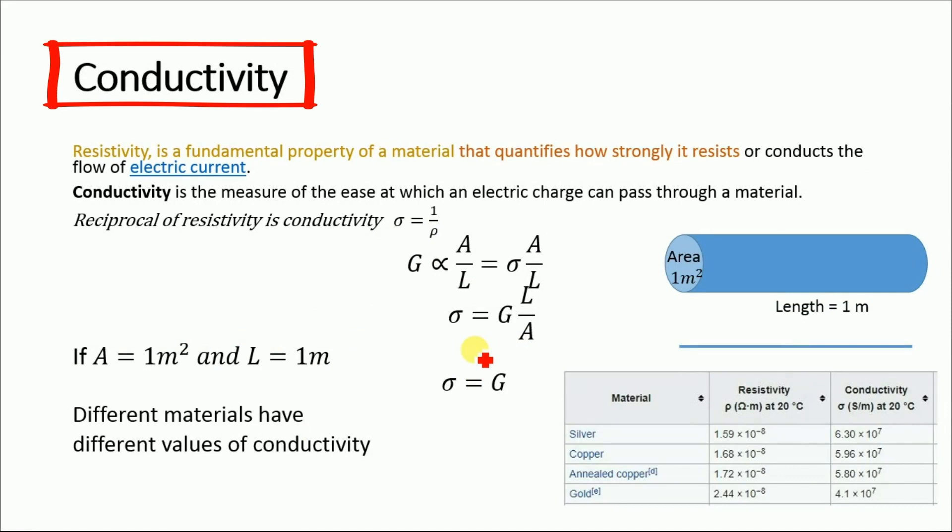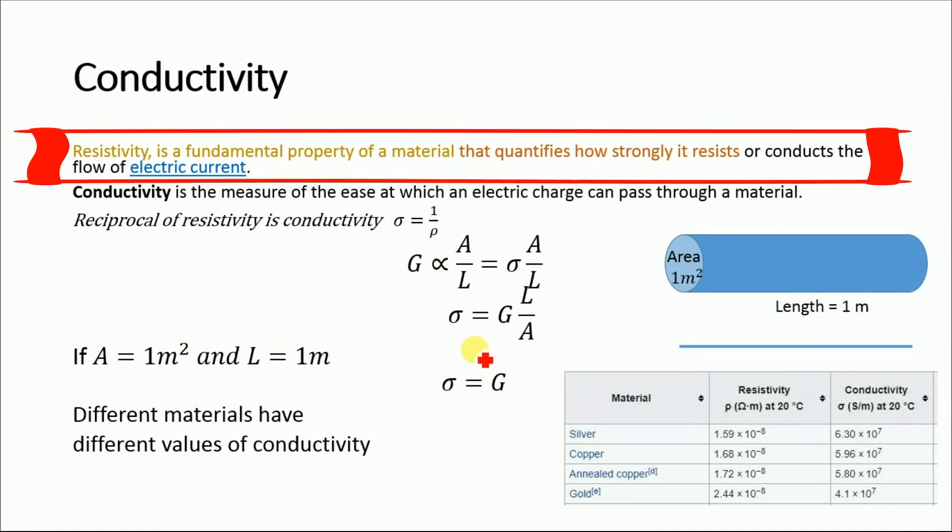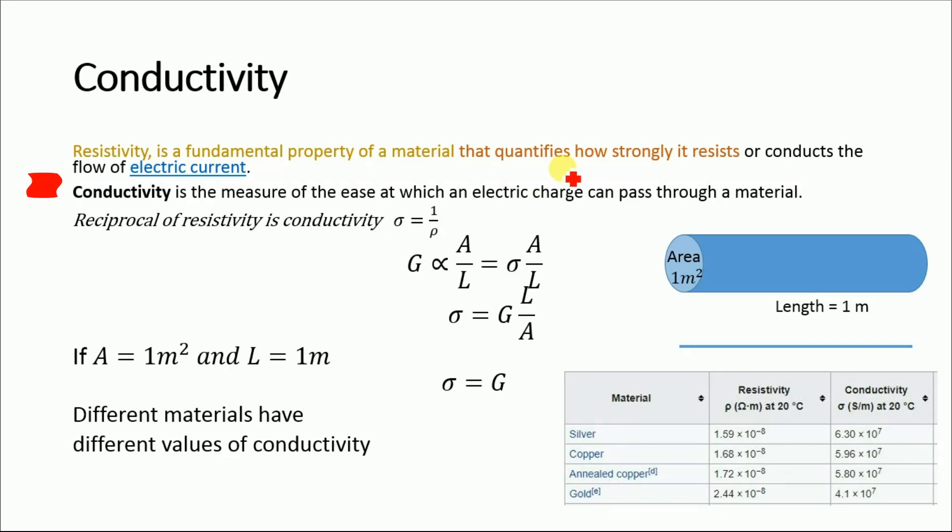Now what is conductivity? We know that resistivity is a fundamental property of a material that quantifies how strongly it resists or conducts the flow of electric current. Conductivity is the measure of the ease at which an electric charge can pass through a material.